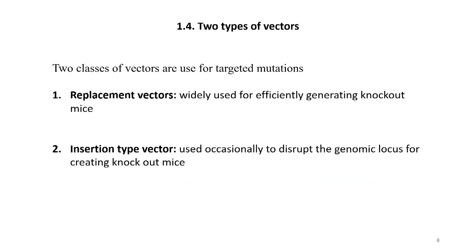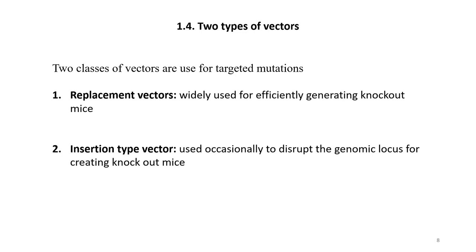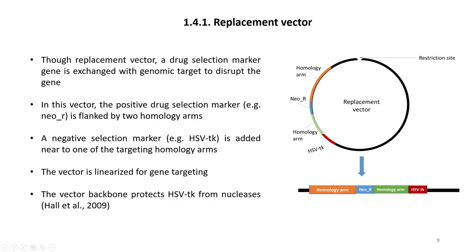There are two types of vectors used for creating knockouts or targeted mutations: replacement vectors and insertion type vectors. Replacement vectors are widely used for efficiently generating knockout mice. Insertion type vectors are used occasionally to disrupt the genomic locus. In the first case the gene is totally replaced, but in the second case the gene is disrupted by insertion of intervening sequences.